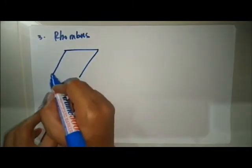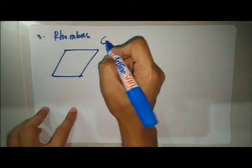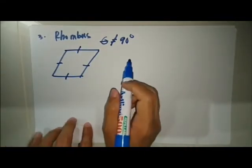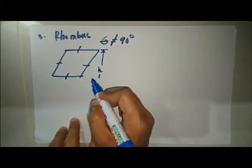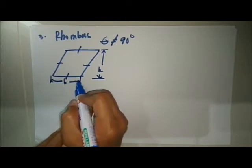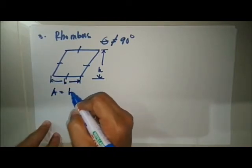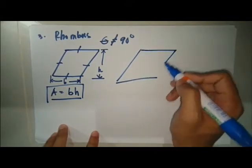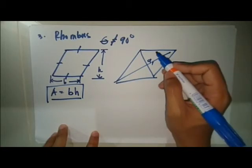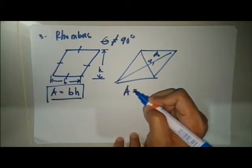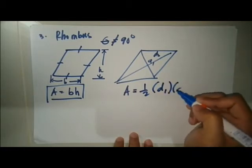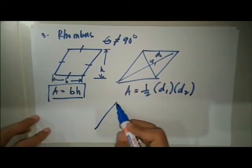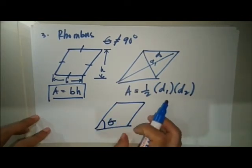The rhombus has equal sides but no 90-degree angles. Given the height and the length of the base, the area is base times height. If the diagonals are given — say d1 and d2 — the area is given by one half times d1 times d2.